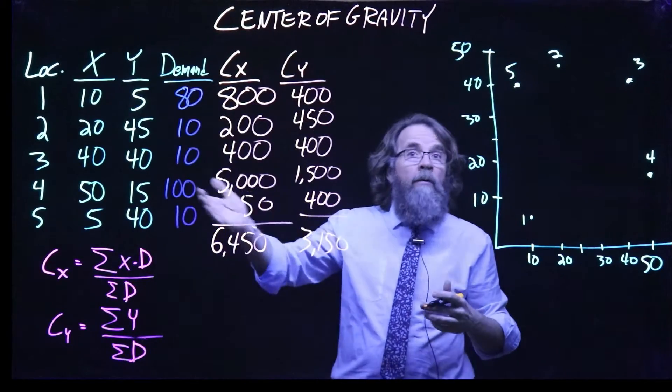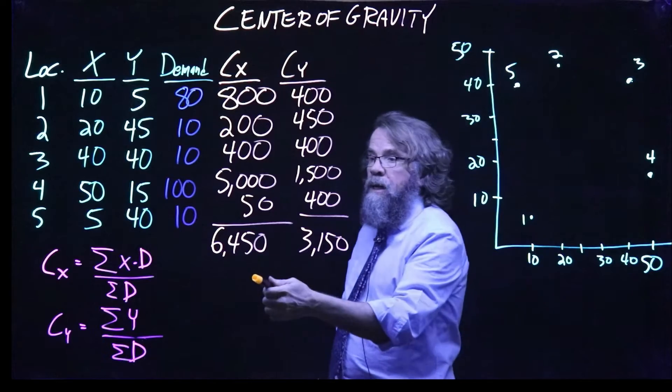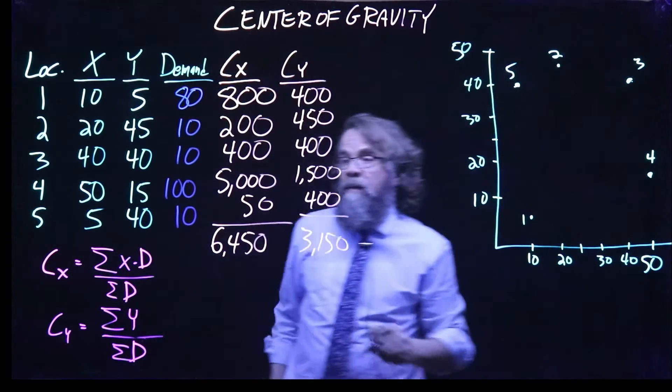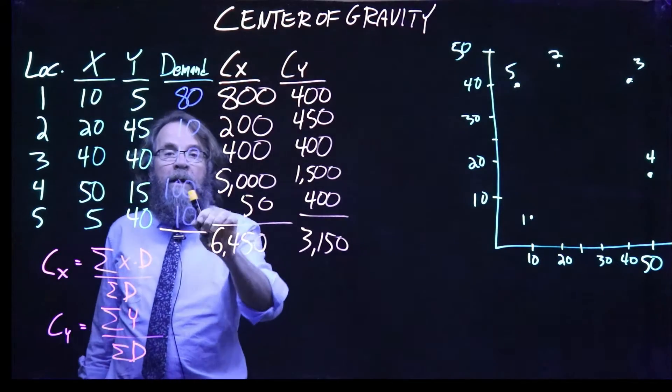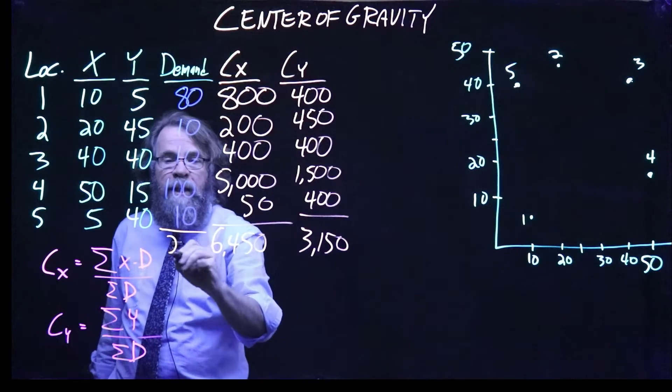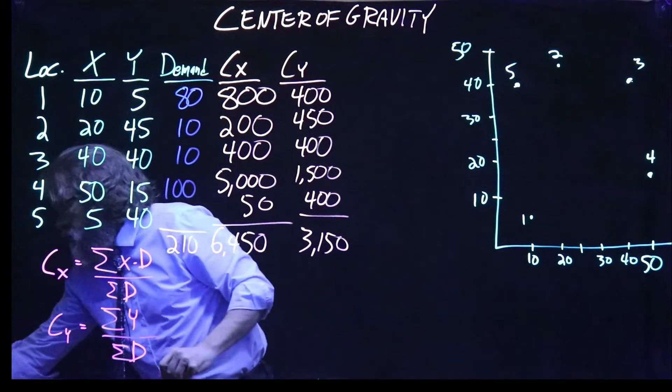We've done the multiplying, we've done the summing. Now we're going to take 6450 and 3150 and divide them by the sum of the demands. So we have 180, 90, 200. We have 210 as our total demand.